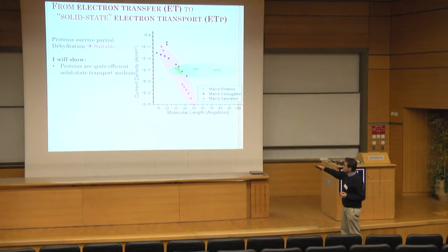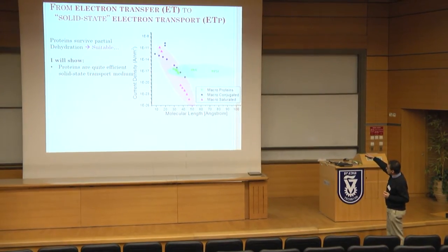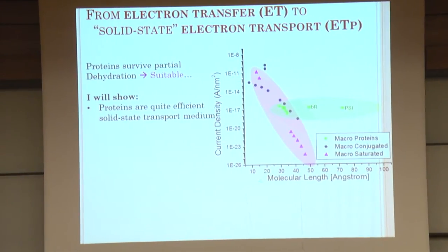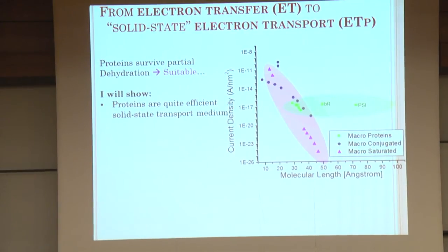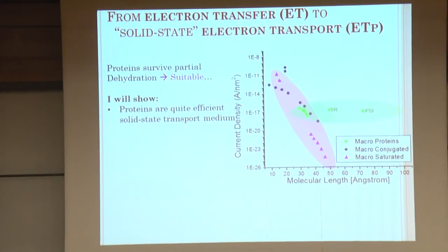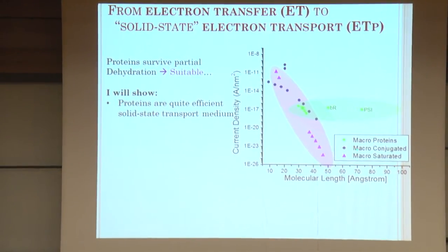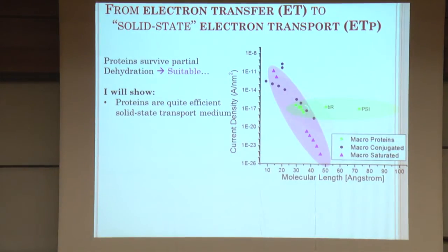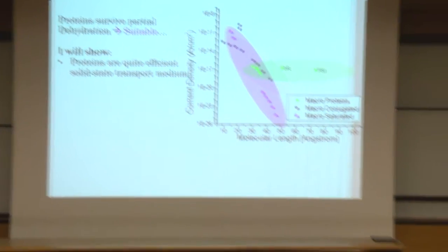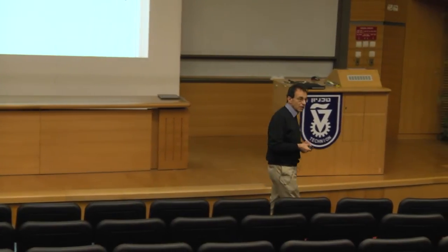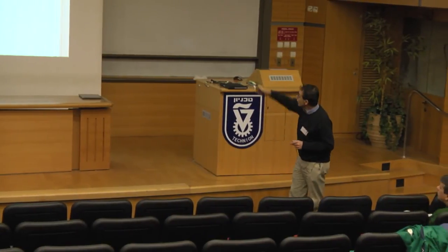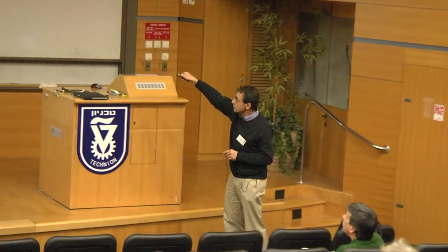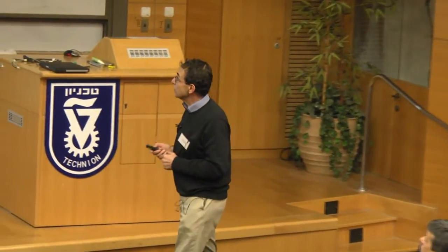So, I'll show that proteins are quite efficient solid-state transport media. And on this plot, a semi-log plot, this is the current density normalized to an area of a square nanometer. A molecular length in angstrom. Macroscopic measurements of saturated molecules. And they are all done in a very similar way, the measurements. Then these are measurements on conjugated molecules. They are here. And here are proteins. I will talk about these proteins. And you see, the data are pretty close to those of conjugated molecules, which is not the way I would have thought when I started.